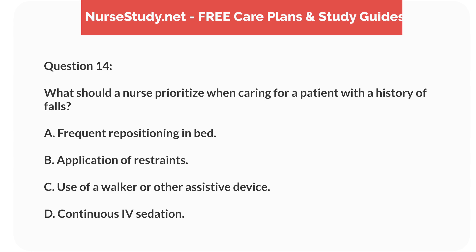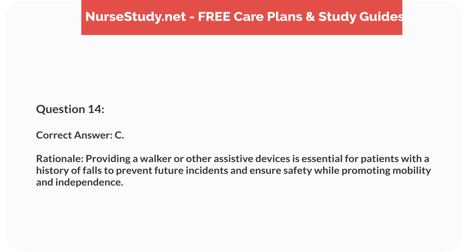Question 14. What should a nurse prioritize when caring for a patient with a history of falls? A. Frequent repositioning in bed. B. Application of restraints. C. Use of a walker or other assistive device. D. Continuous IV sedation. Correct answer: C. Rationale: providing a walker or other assistive devices is essential for patients with a history of falls to prevent future incidents and ensure safety while promoting mobility and independence.